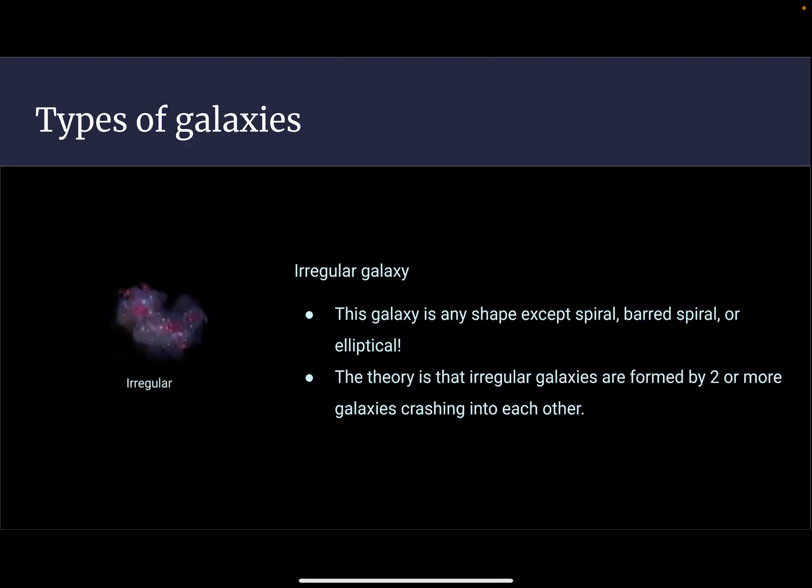An irregular galaxy is a galaxy that is not a spiral, barred spiral, or an elliptical galaxy. The theory of these galaxies is that they're formed when two or more galaxies crash into each other.